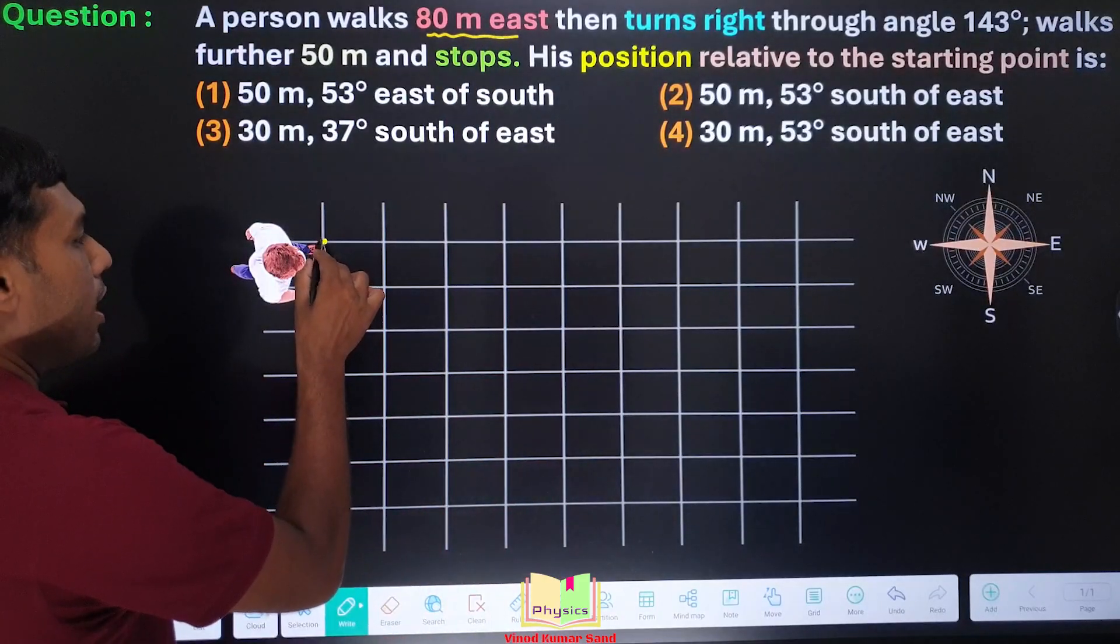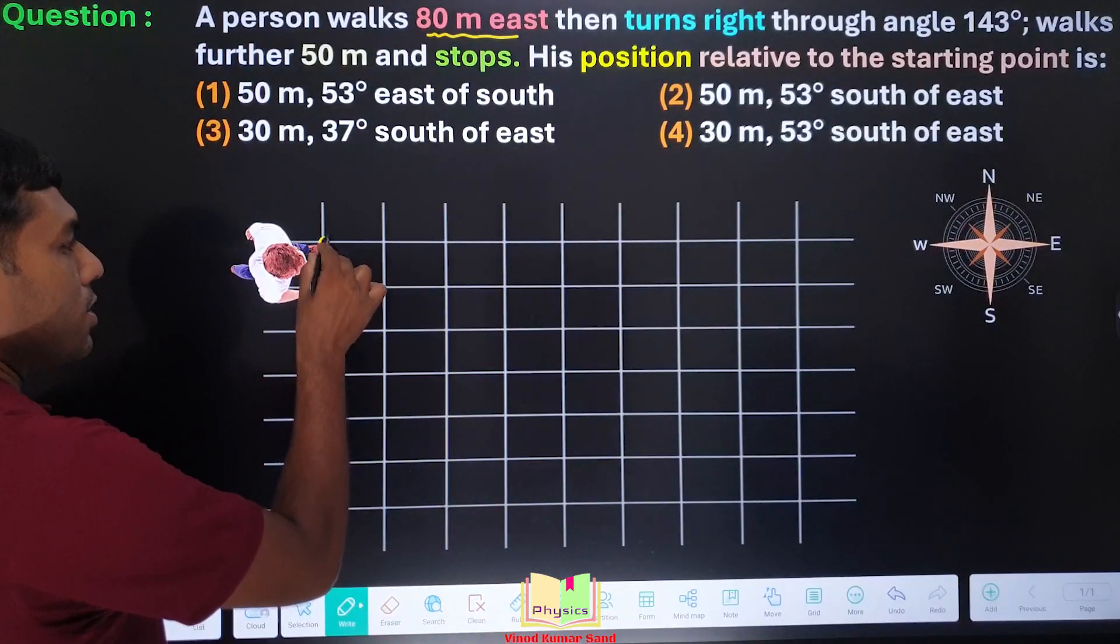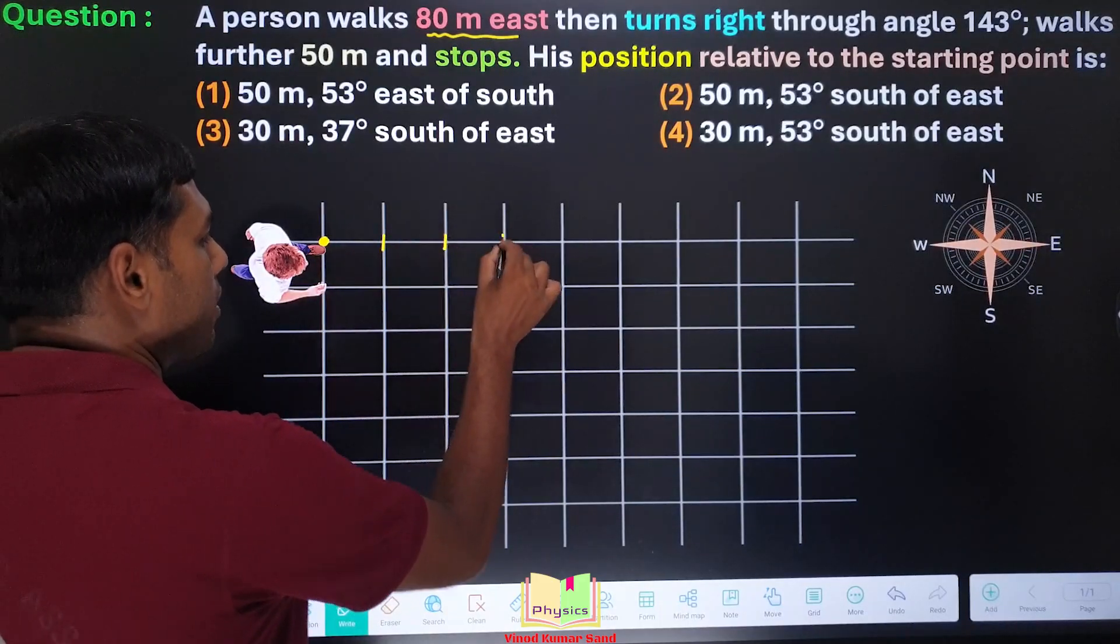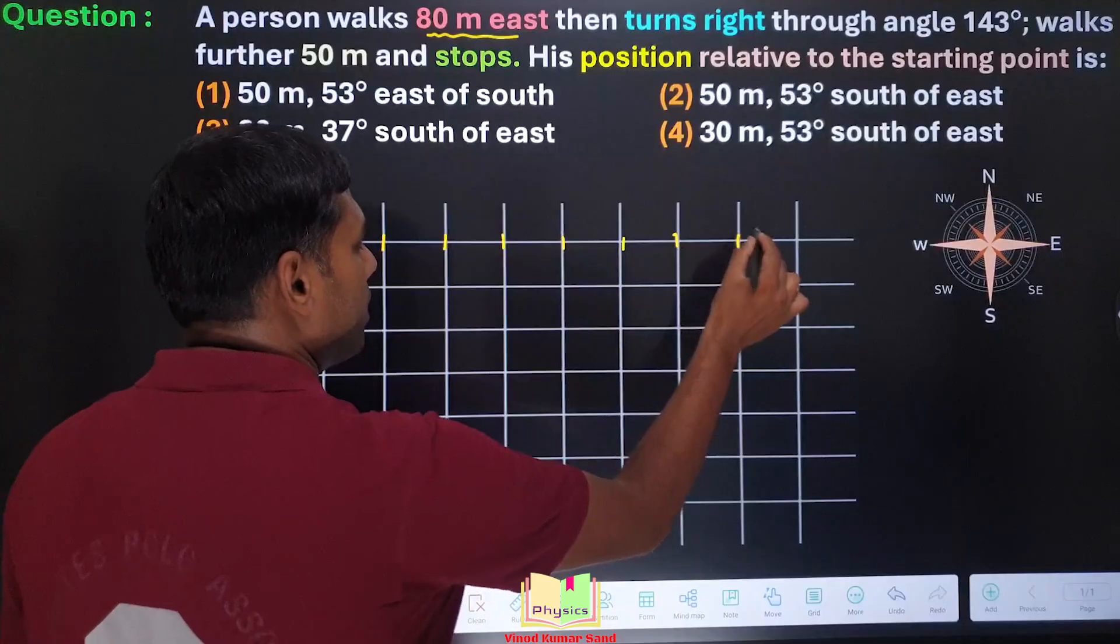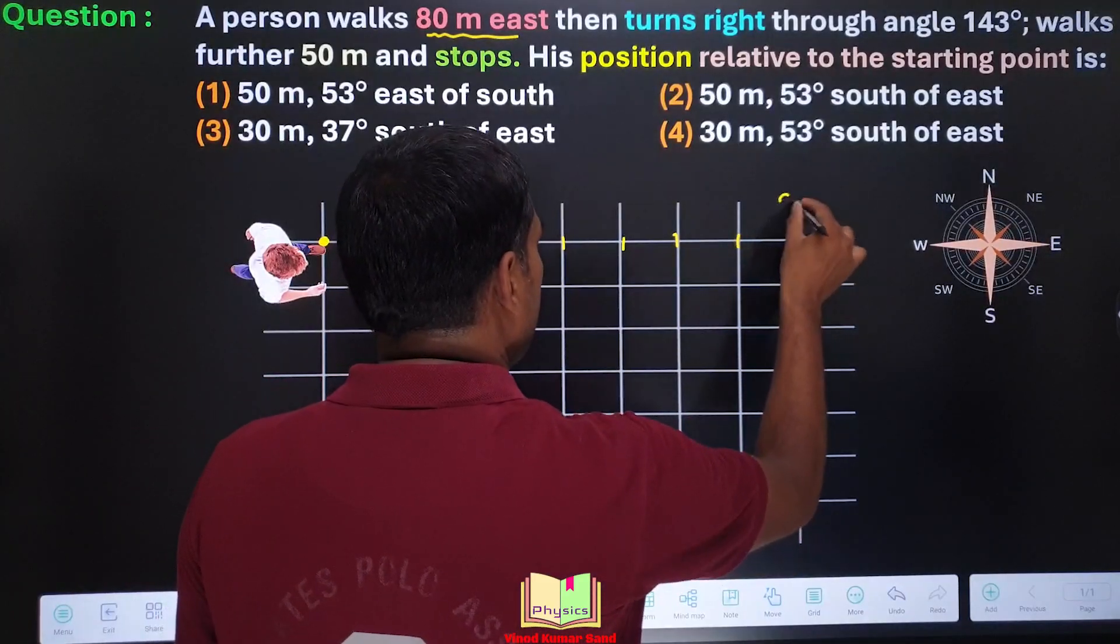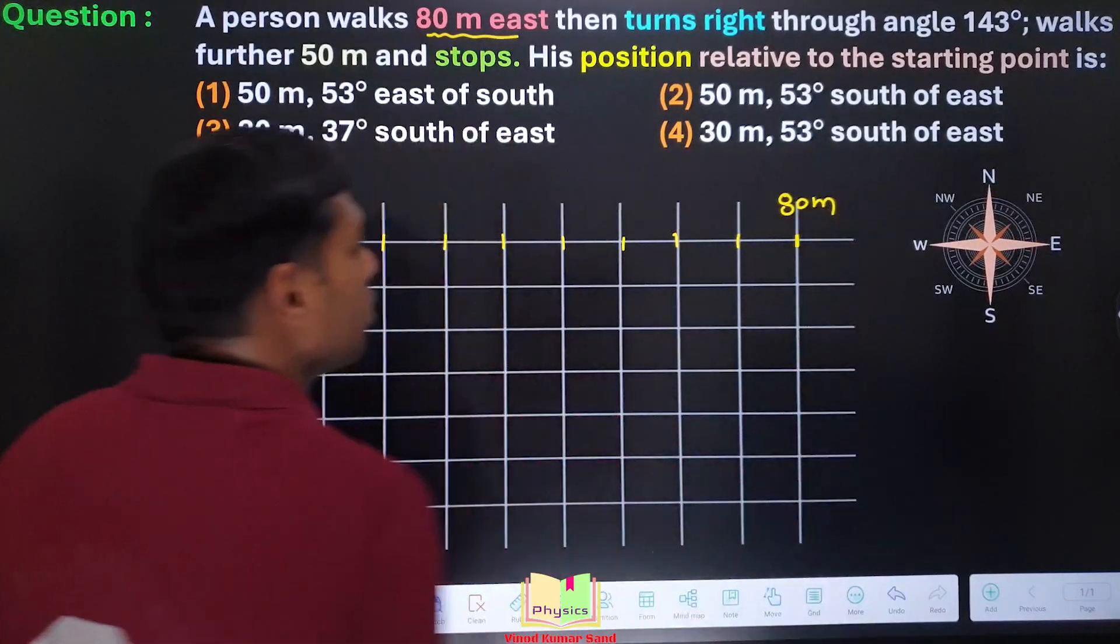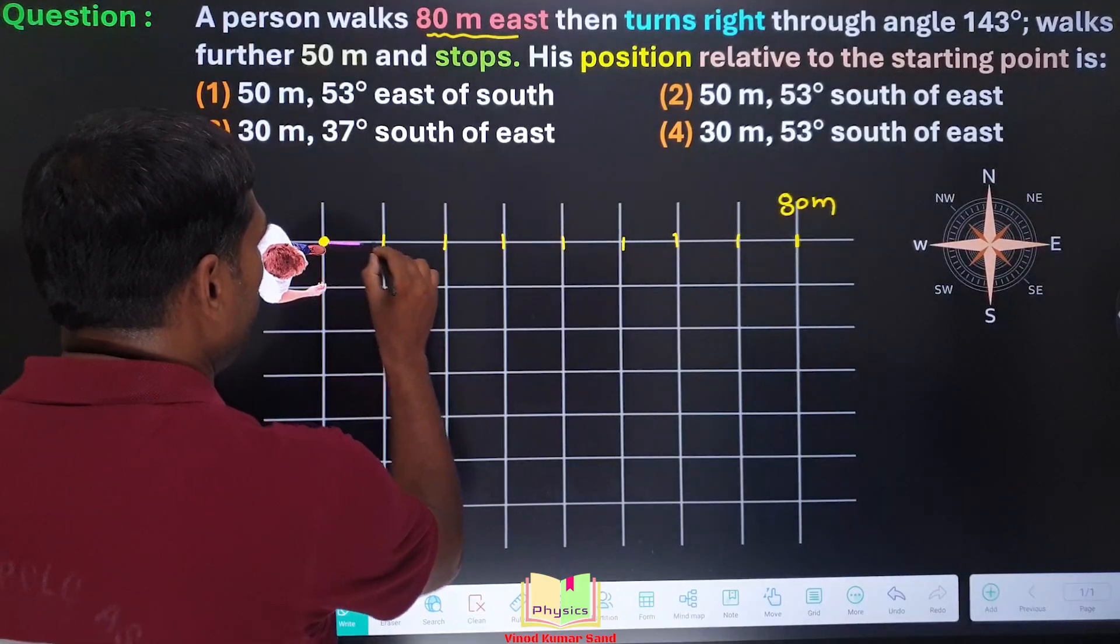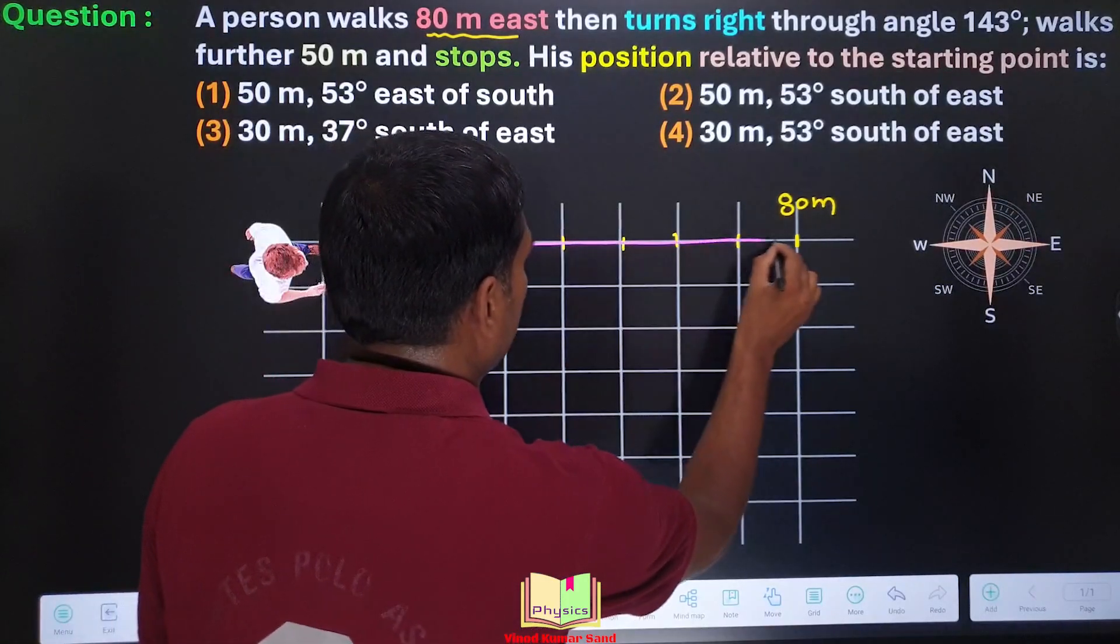Let's say we start from here, we consider this as the origin. 80 meters means 10 meter, 20 meter, 30 meter, 40, 50, 60, 70, 80 meter. Here is the 80 meter. So according to the question, the person goes straight 80 meters from here to here, he travels 80 meters.